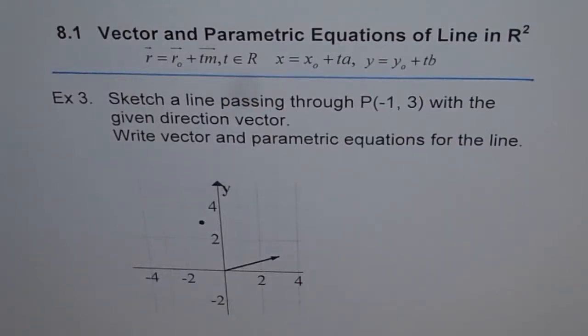8.1 vector and parametric equations of line in R². Example 3: Sketch a line passing through point (-1, 3) with the given direction vector. Write vector and parametric equation for the line. Okay, so this is our direction vector.